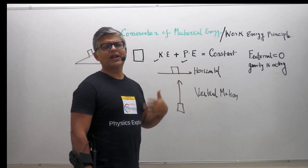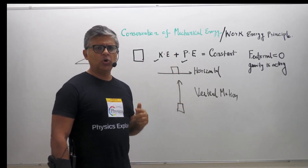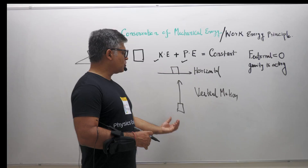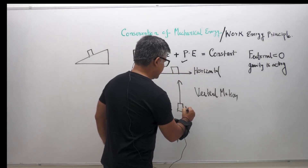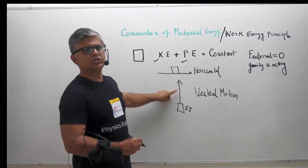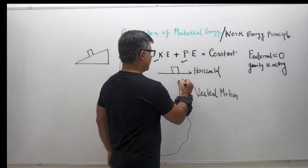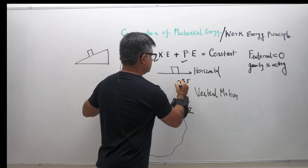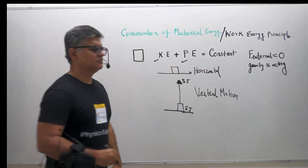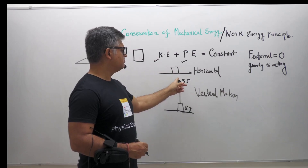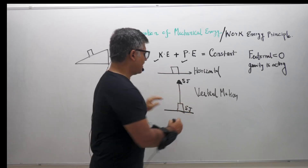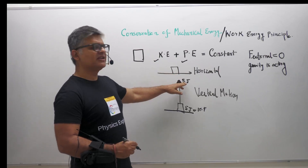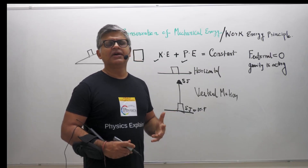Now let's talk about vertical motion. What happens in vertical motion? Gravity is acting, and the gravitational field is a conservative field, so whatever energy is there just gets transformed from one form to another. If you throw this body with a kinetic energy of 5 joules, the energy throughout the motion will remain 5 joules — conserved. When it reaches the highest point, everything is potential energy. You throw with 5 joules — right there you just have kinetic energy. Throughout the motion, your kinetic energy goes down, the potential increases, and the potential energy finally becomes 5 joules. The total mechanical energy has converted into potential energy.